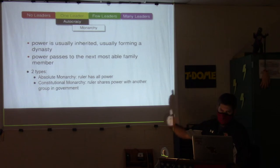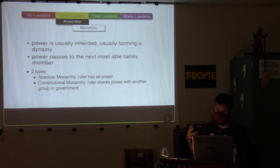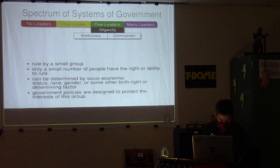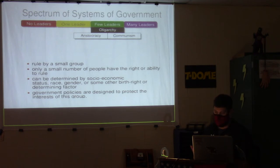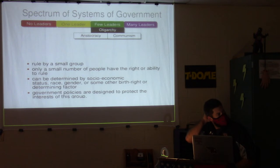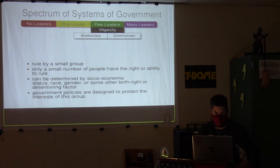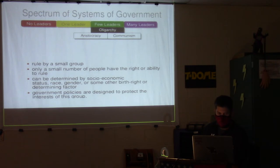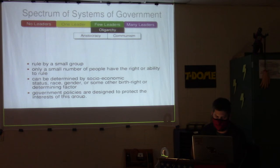Constitutional monarchy would be like our president and legislative branch — Congress. Then we have aristocracy and communism, which are ruled by a small group of people. Only a small number of people have the right or ability to rule — you almost have to be royalty, a major landowner, or meet some socioeconomic, racial, gender, or birthright determining factor. Government policies are designed to protect the interest of this group only.